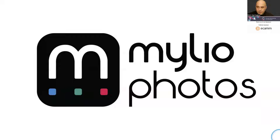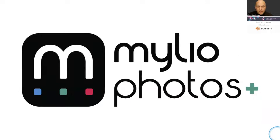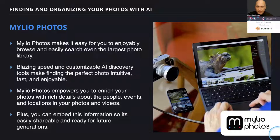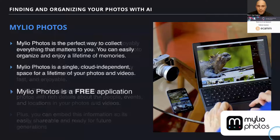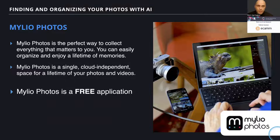MyLeo Photos is a free application that helps you organize and search for photos. There's also a paid version called MyLeo Photos Plus that adds backup and device syncing so you can take everything with you when you travel. MyLeo Photos makes it really easy to browse and enjoy a very large photo library. I've got about half a million images on hard drives at home. MyLeo Photos works with everything locally — it can work with the cloud if you choose to, but it keeps everything private and runs on local storage. This makes it really fast to do AI searches, and you can add information about people, events, or locations that all become searchable and embeddable.